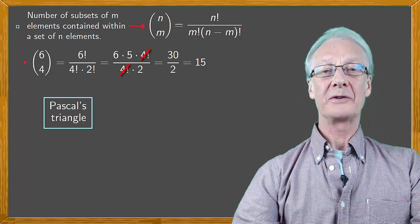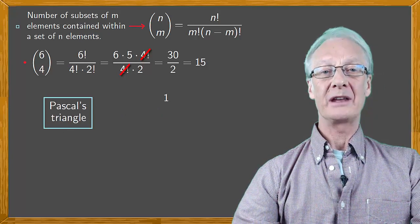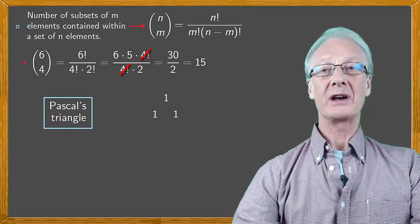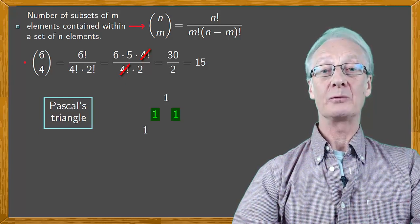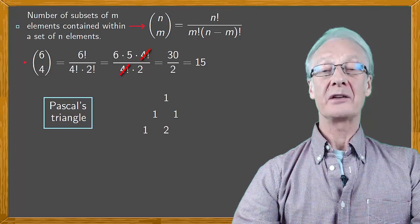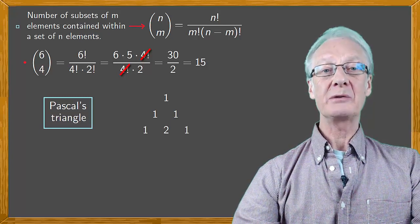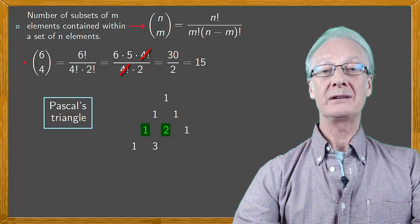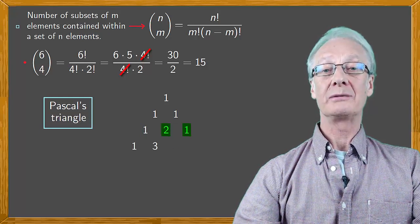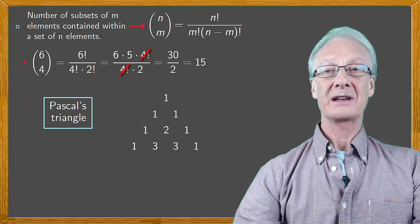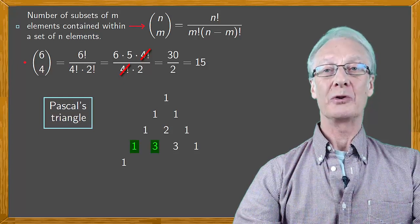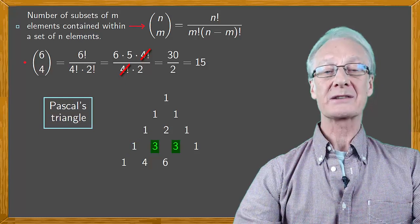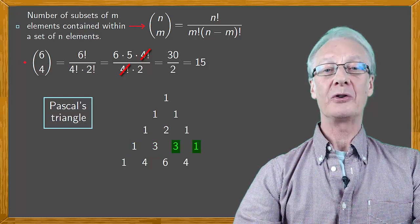To make the triangle, we first write one, then go down one, one, then go down a row and write one again, then one plus one, which is two, then another one. Continuing with the next row, one, then one plus two or three, two plus one, three, and one. Next row, one, one plus three, four, three plus three, six, three plus one, four, and one.